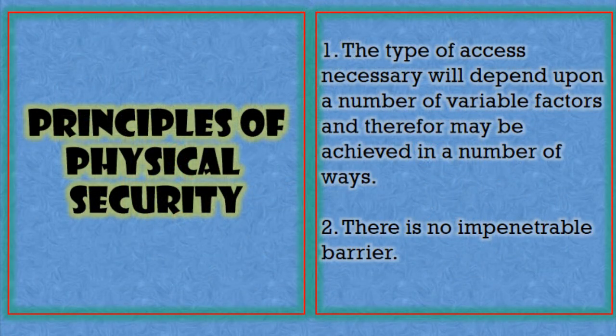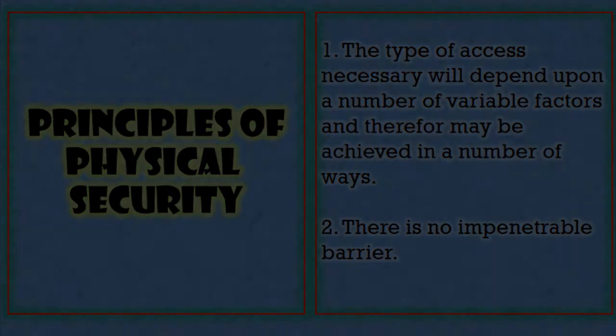Some principles of physical security: first, the type of access necessary will depend on a number of variable factors and may be achieved in a number of ways. Second, there is no impenetrable barrier — all barriers have weaknesses or a way to be penetrated. We should not be overconfident or rely solely on the barriers we have installed.